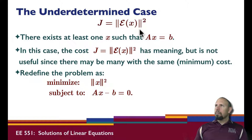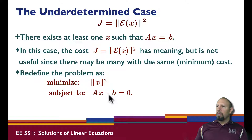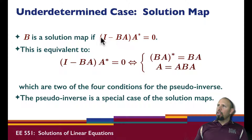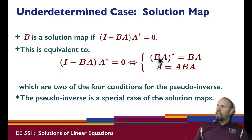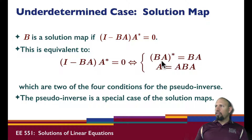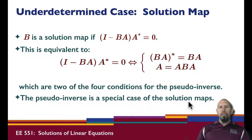In the under-determined case, there is at least one x that satisfies the equation. We recast the problem: of all the solutions, we find the one with the smallest x. That leads us to the solution map equation. I can show this equation is equivalent to two equations — we get A = ABA again, and BA is self-adjoint, analogous to the other case where AB was self-adjoint. Again, only two conditions of the pseudo inverse. So the pseudo inverse is a special case of both solution maps.